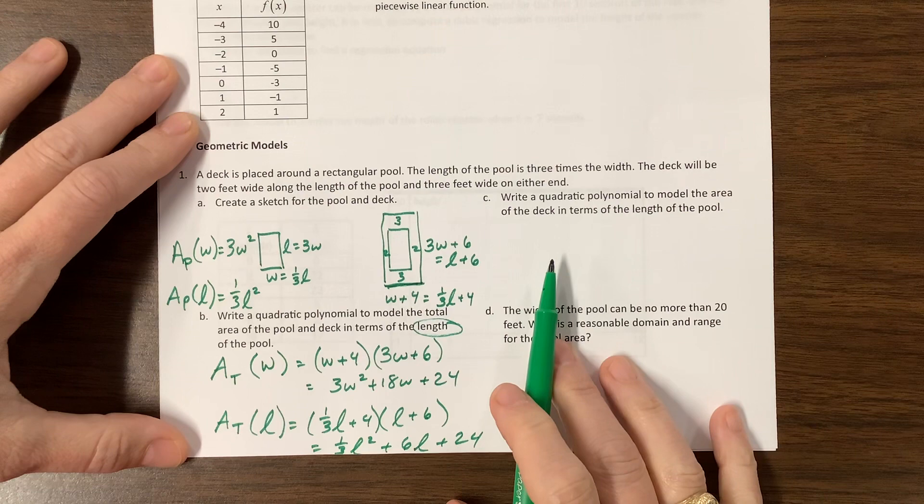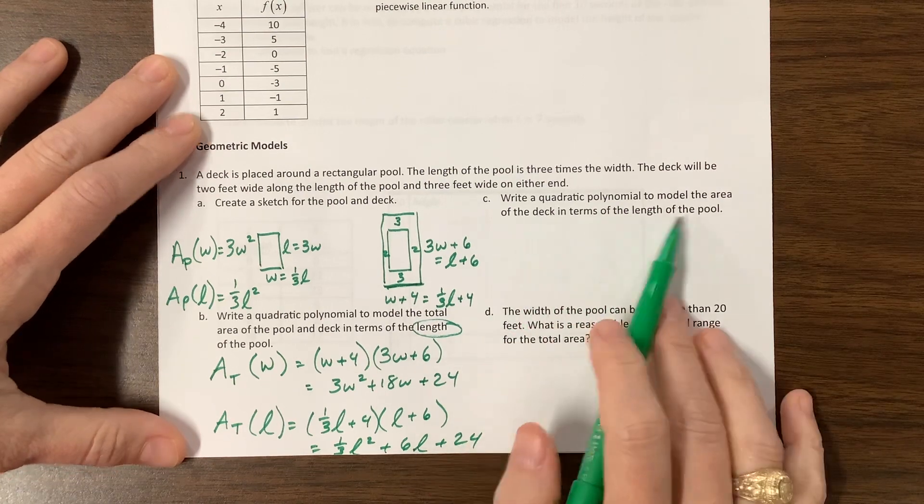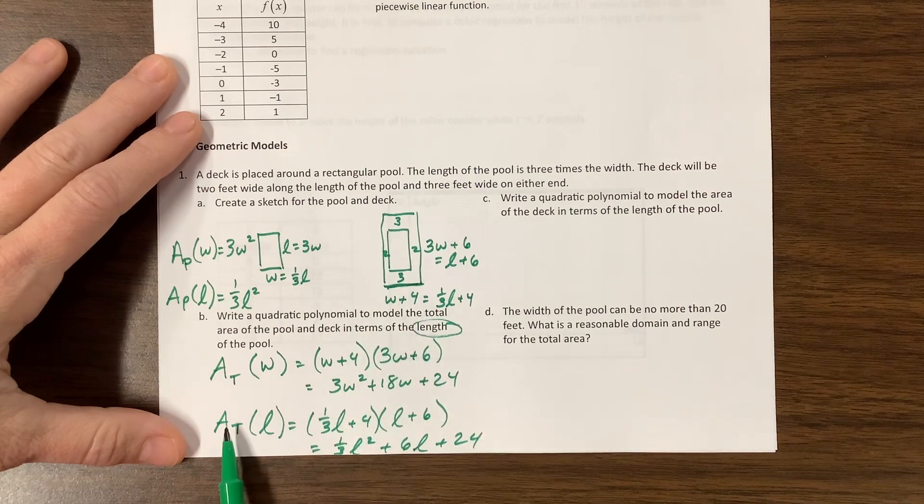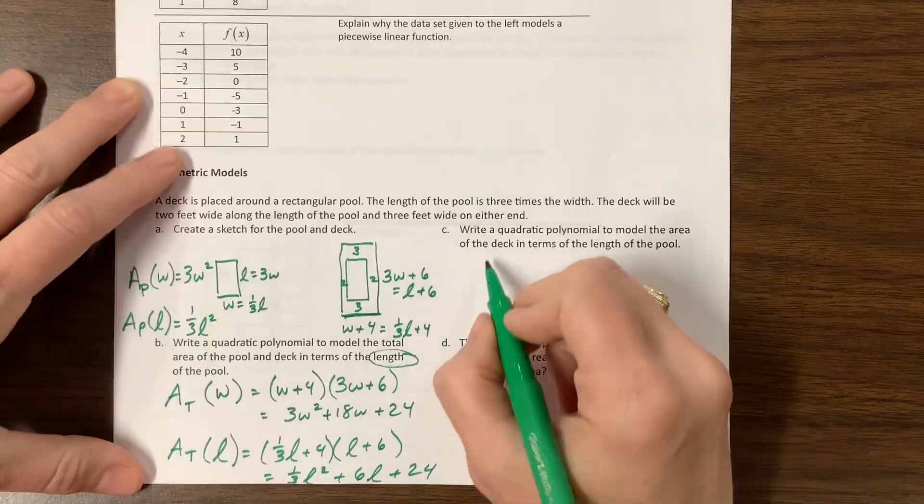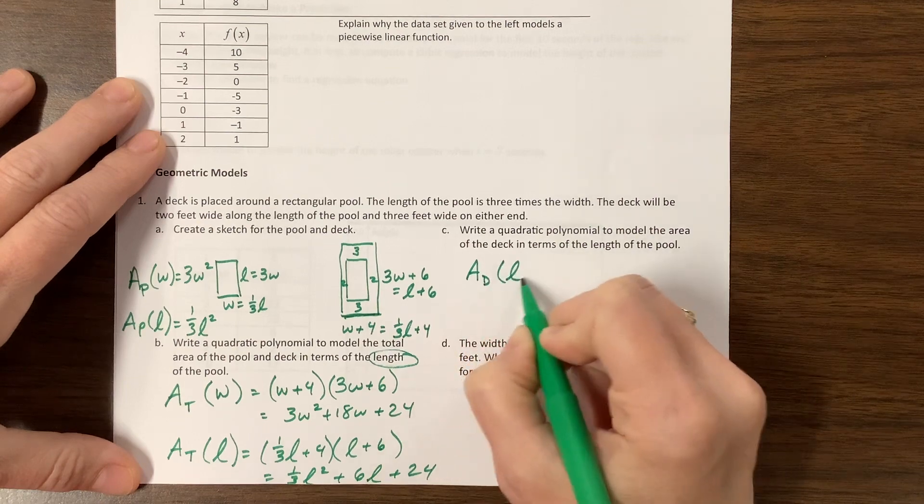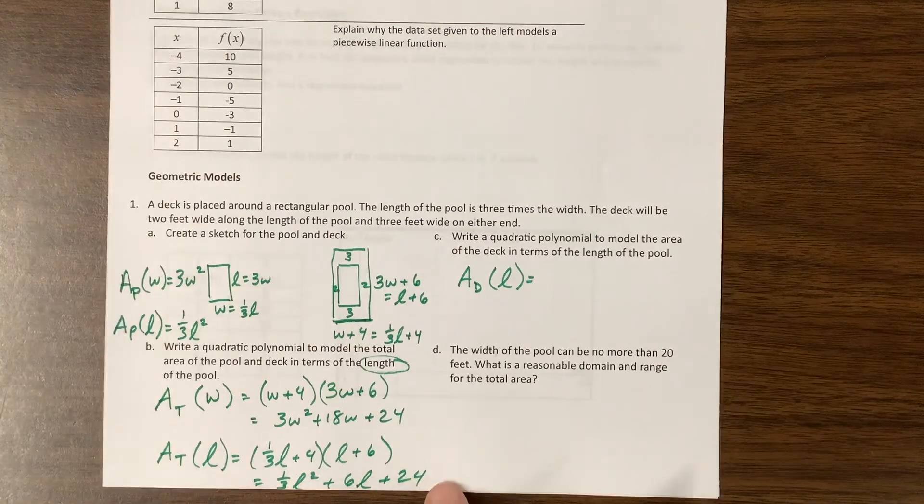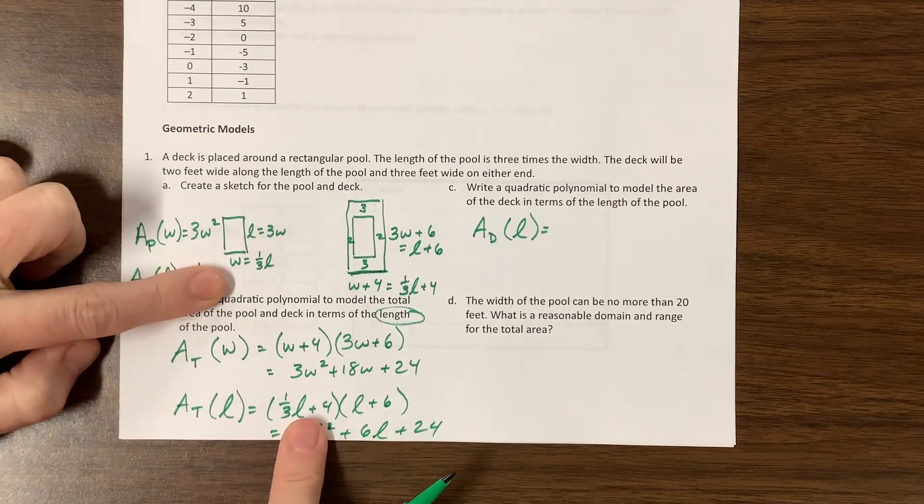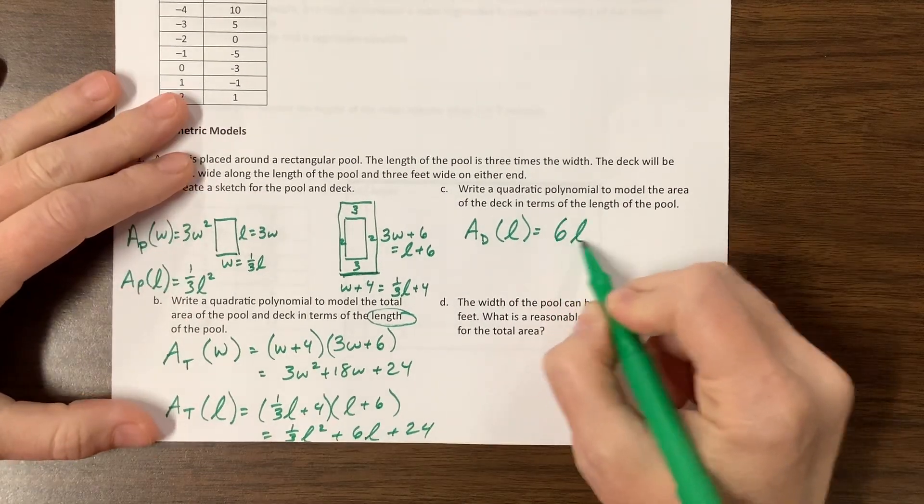So then this one, they want us to define the area of the deck, so the deck is going to be the entire, the total, minus the pool. So if we're doing the area of the deck in terms of length, it would be this mess right here, minus this mess. Notice these things cancel. And so we're just left with six l plus 24.